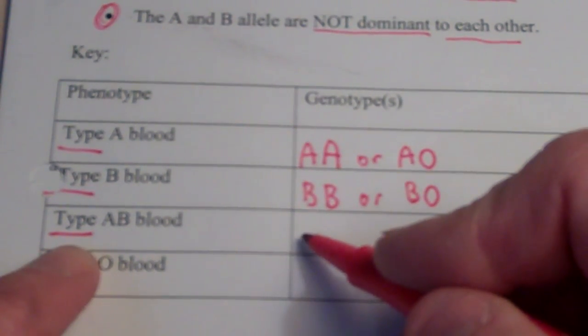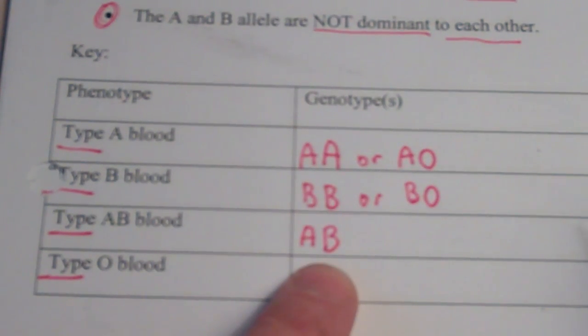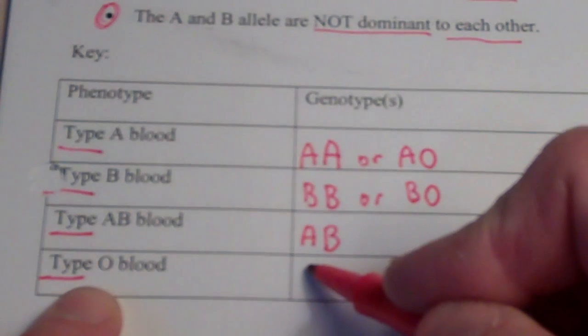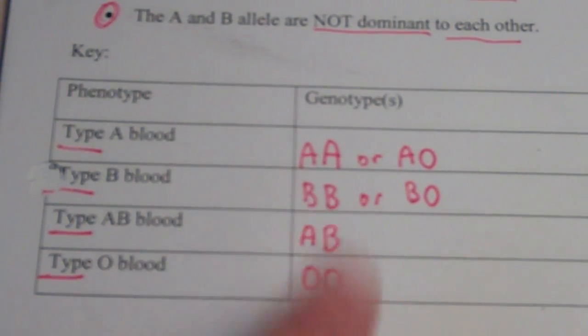If you're type AB blood, you get an A from one parent and a B from the other. You know your genotype if you are type AB blood. If you're type O blood, you get an O from one parent and an O from the other, so you are OO. And yes, you know your genotype as well.